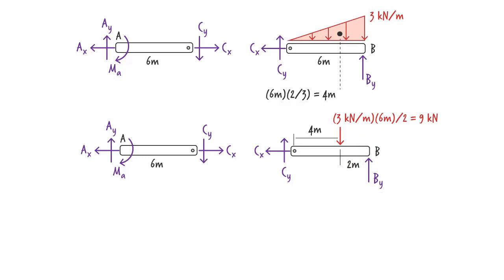Since we can write three equilibrium equations for each free body diagram, we end up with six equations and six unknowns. Hence, we have a statically determinate beam.